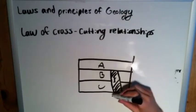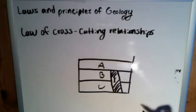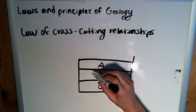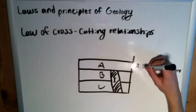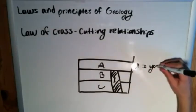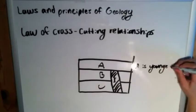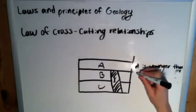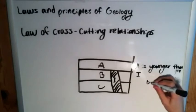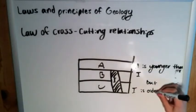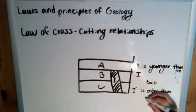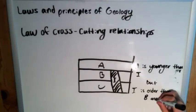Where we have I and it cuts through these two because it occurs, the intrusion of I occurs after B and C were deposited, but afterwards erosion occurs which flattens the surface here and then strata A is deposited on top of I. So we can say because of that that A is younger than I, but I is older than both B and C.